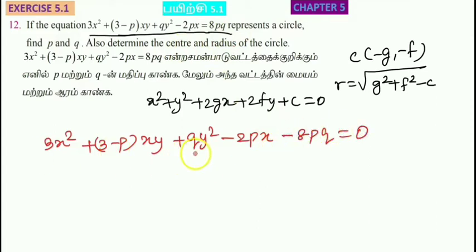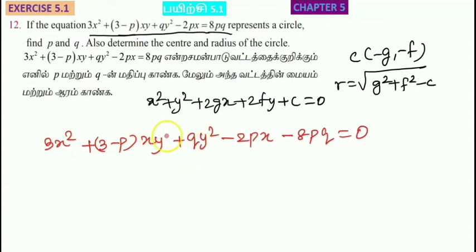We can write the equation of the circle as x squared plus y squared minus 8pq equals 0.